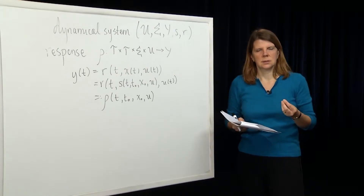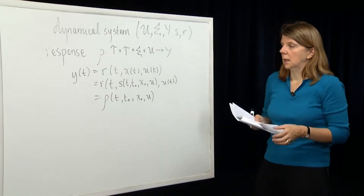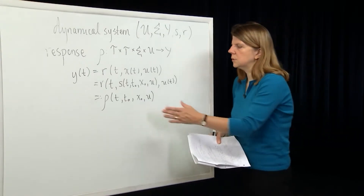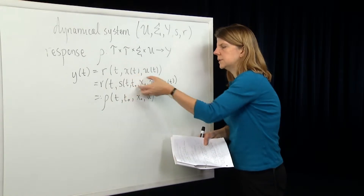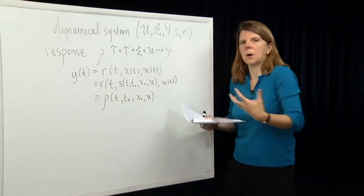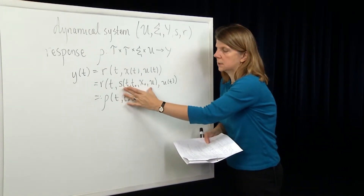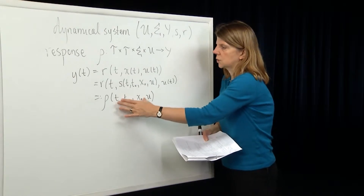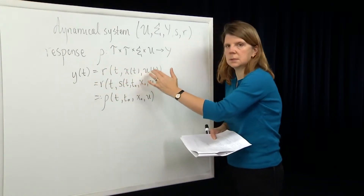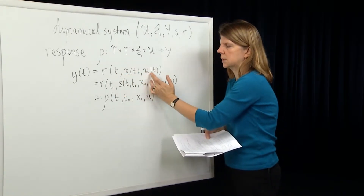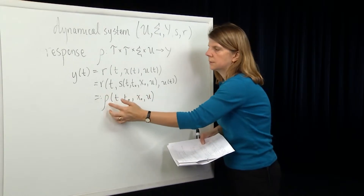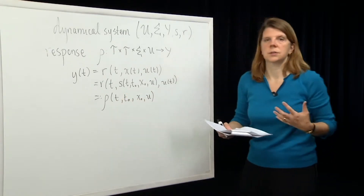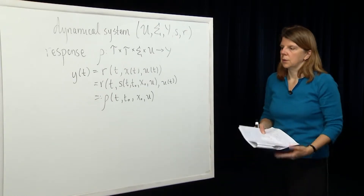The states intrinsic to the system can be defined in many different ways, so often the outputs have some physical meaning and that output function represents something physical. It's interesting to think about the part of the state transition function which is projected onto the outputs. The response function is different from the readout map. The readout map is a static map from the current time, the state at the current time, and the input at the current time. The response function gives the output at the current time, but also tells us how it has evolved over the time interval.